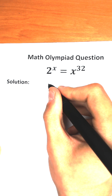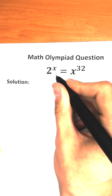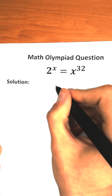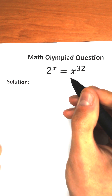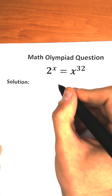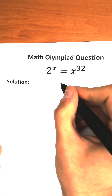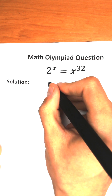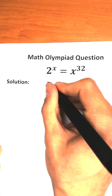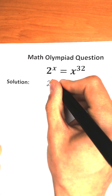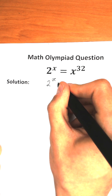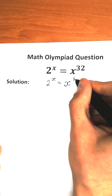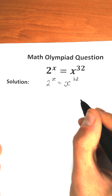Interesting exponential equation today: 2 to the power x equals x to the power 32. How can you solve it? In this video I'm going to fully explain you how to do this step by step. First of all, let's rewrite our challenge.